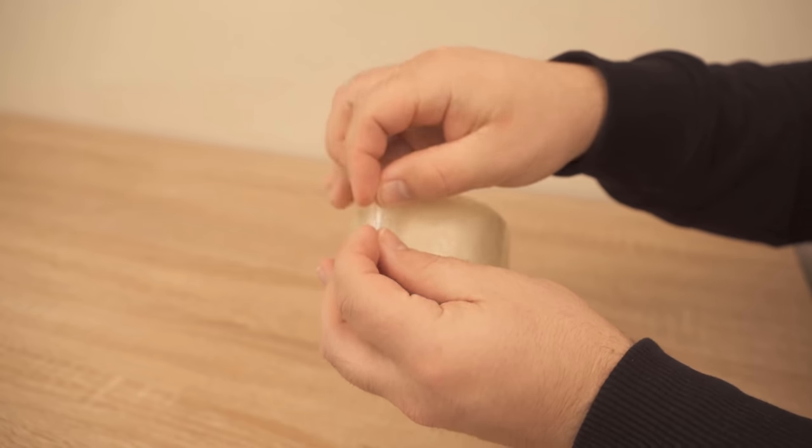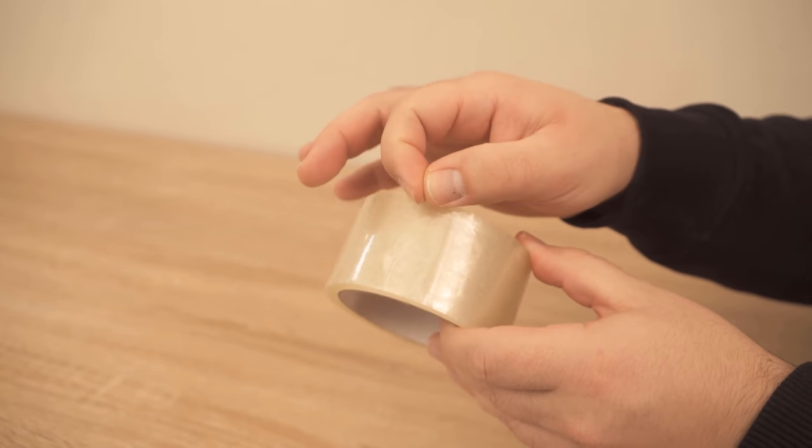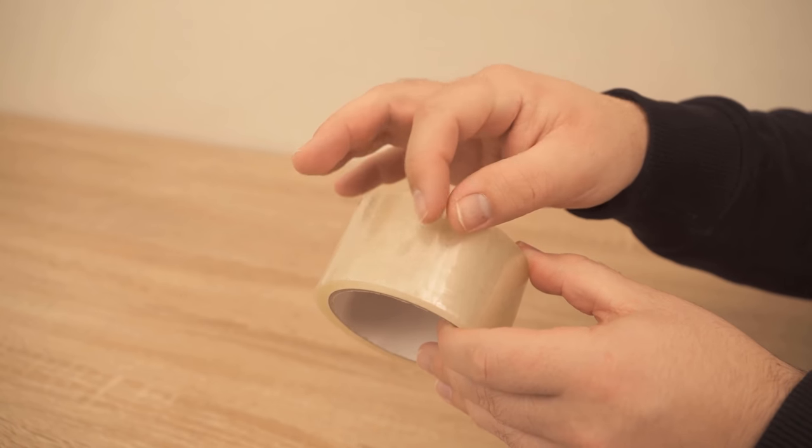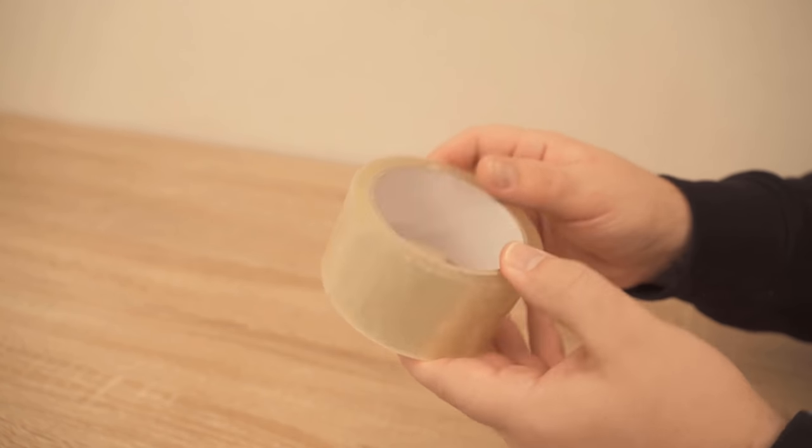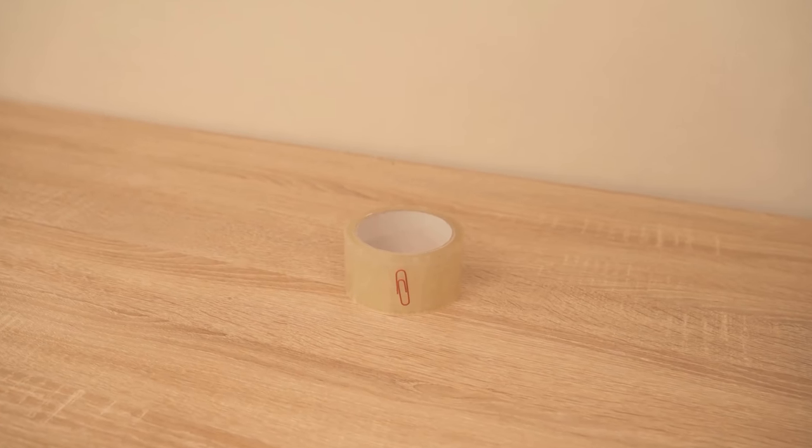Now you have a little corner at the end of the tape roll that doesn't stick anymore, so it always sticks out a bit. This way you have the beginning of the tape roll every time and don't have to pick wildly looking for the beginning first.